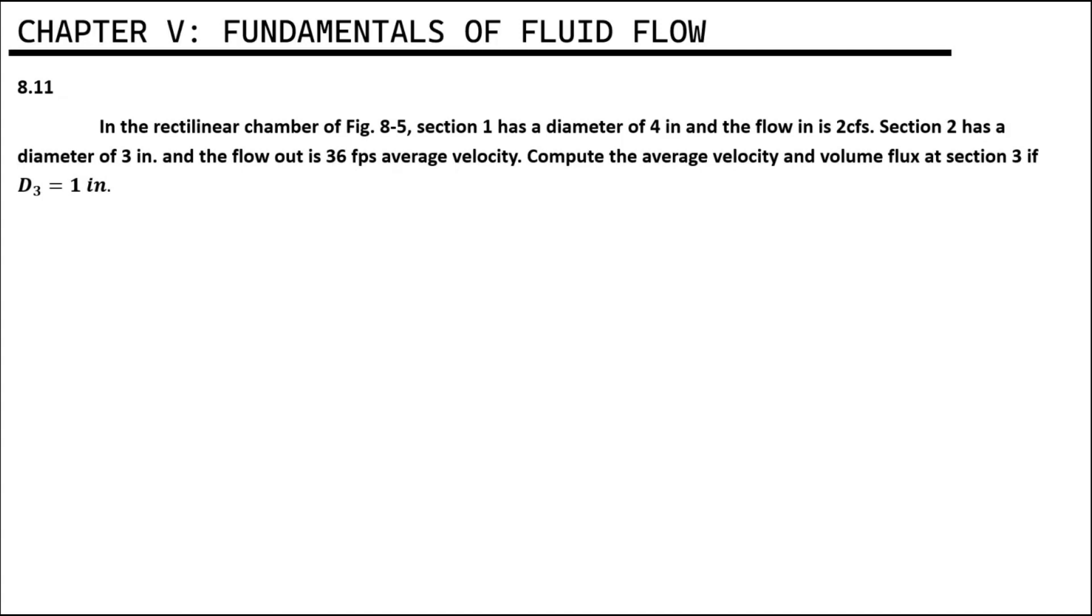In the rectilinear chamber of figure 8-5, Section 1 has a diameter of 4 inches and the flow in is 2 CFS. Section 2 has a diameter of 3 inches and the flow out is 36 FPS average velocity. Compute the average velocity and volume flux at Section 3 if D3 is equal to 1 inch.